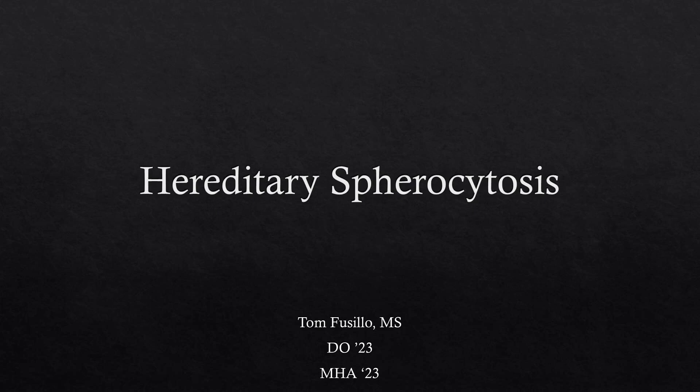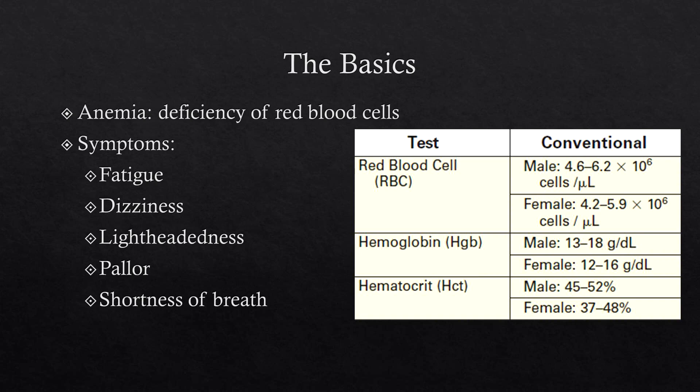Hello everybody and welcome to this lecture on hereditary spherocytosis. Since hereditary spherocytosis is a form of anemia, I always include this slide in my anemia lectures. Anemia is a deficiency of RBCs or hemoglobin, and the symptoms are fatigue, dizziness, and lightheadedness. Once it gets a little worse you start to see pallor in the skin, and in later stages shortness of breath because your oxygen binding capacity is much lower.